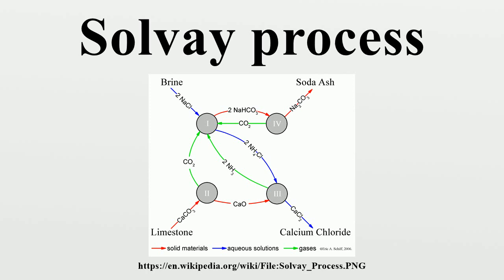The principal by-product of the Solvay process is calcium chloride in aqueous solution. The process has other wastes and by-products as well. Not all of the limestone that is calcined is converted to quicklime and carbon dioxide — the residual calcium carbonate and other components of the limestone become wastes. The salt brine used by the process is usually purified to remove magnesium and calcium ions, typically forming carbonates, which are additional waste products. Otherwise, these impurities would lead to scale in the various reaction vessels and towers.